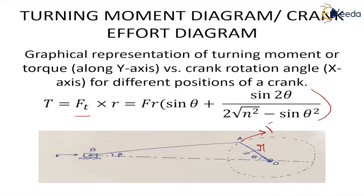So Ft, the tangential force at the crank pin, provides the required turning moment to the crankshaft. The graphical representation of this turning moment for the crank rotation angle theta — what is the turning moment at any particular instant — is what we try to plot with the turning moment diagram. In other words, it is the graphical representation of turning moment according to the crank rotation angle theta.